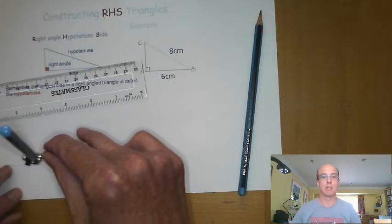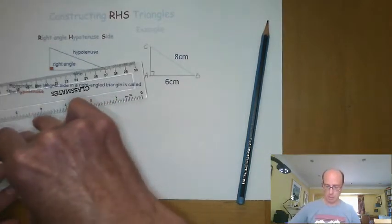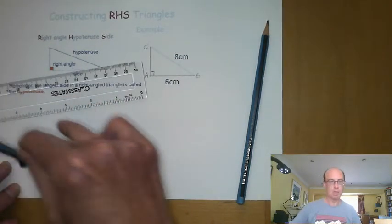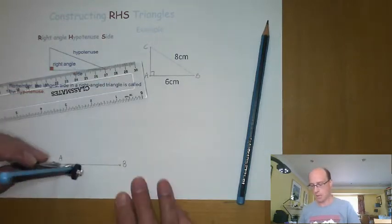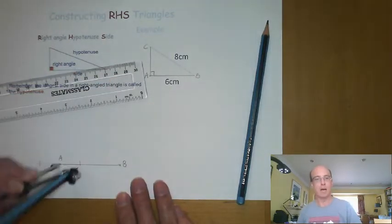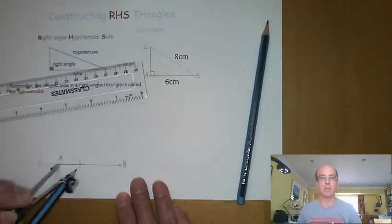I'm then going to take my compass and I'm going to measure a distance from the point A both to the left and to the right along that line. So I'm going to mark an arc to the left of point A, and another point to the right-hand side of A.